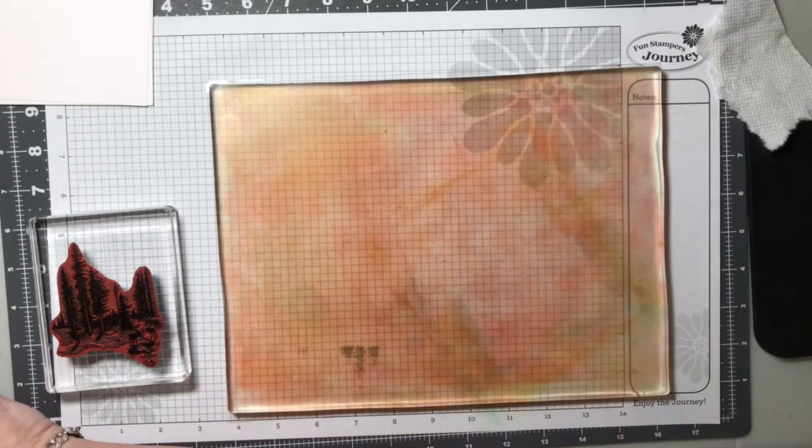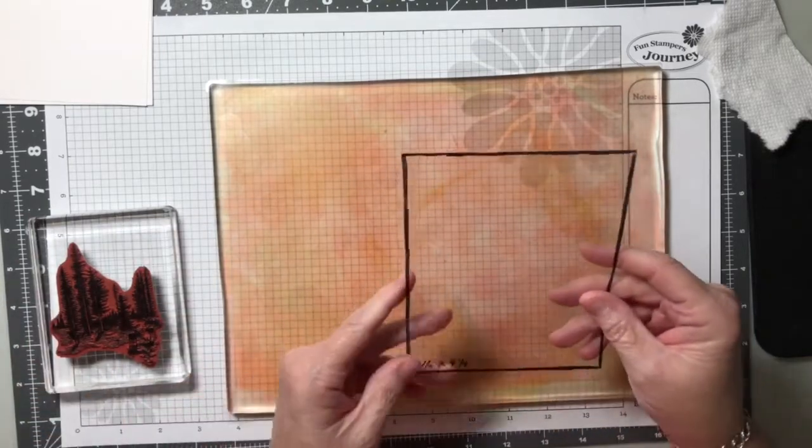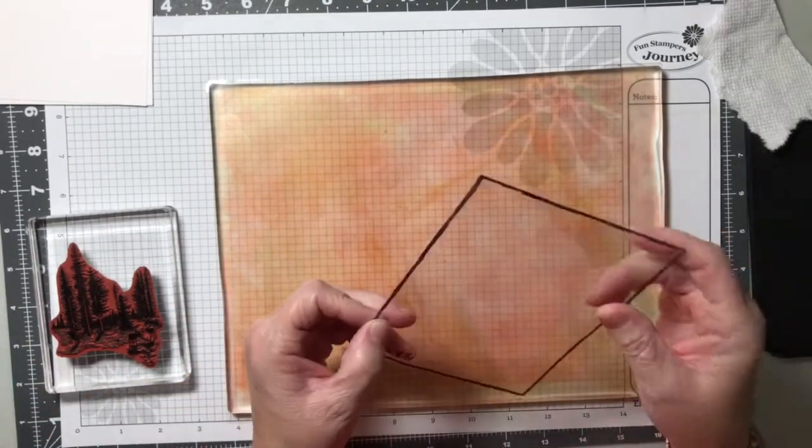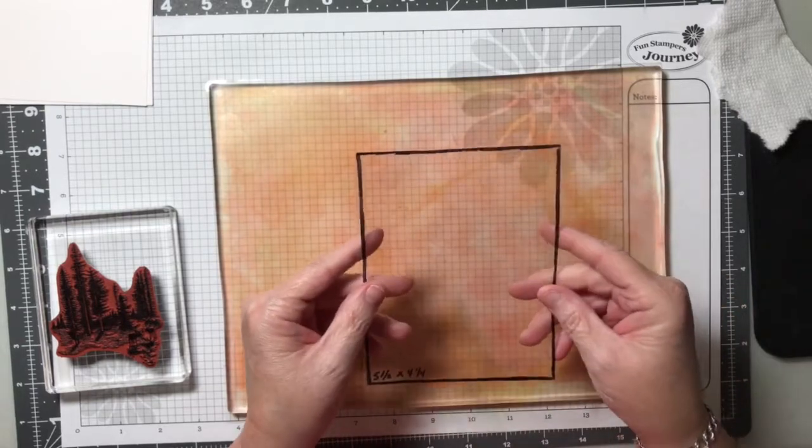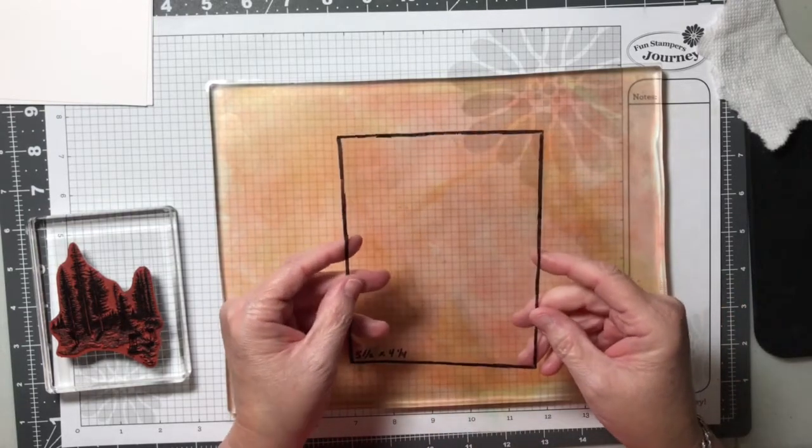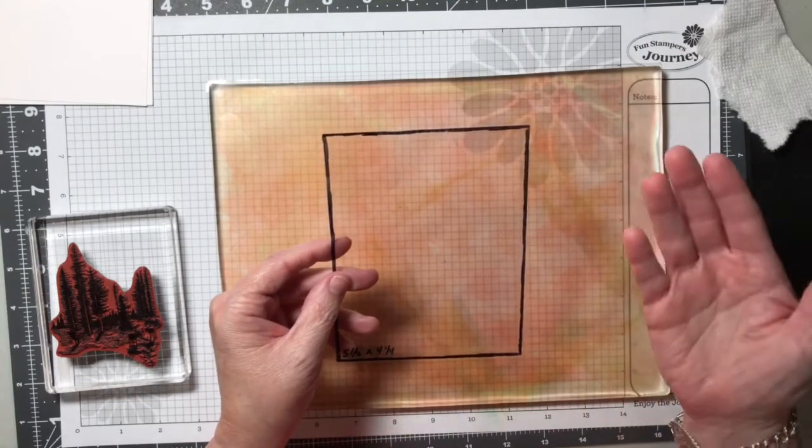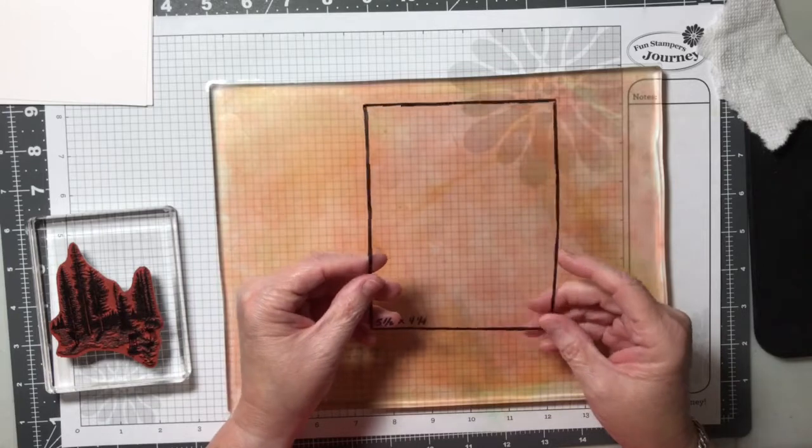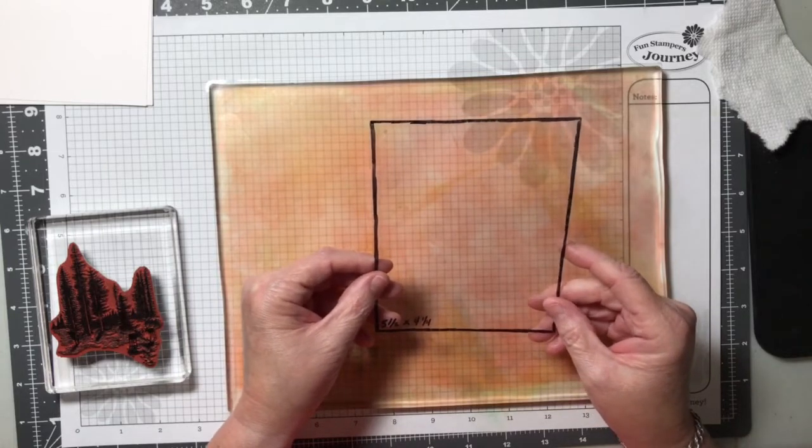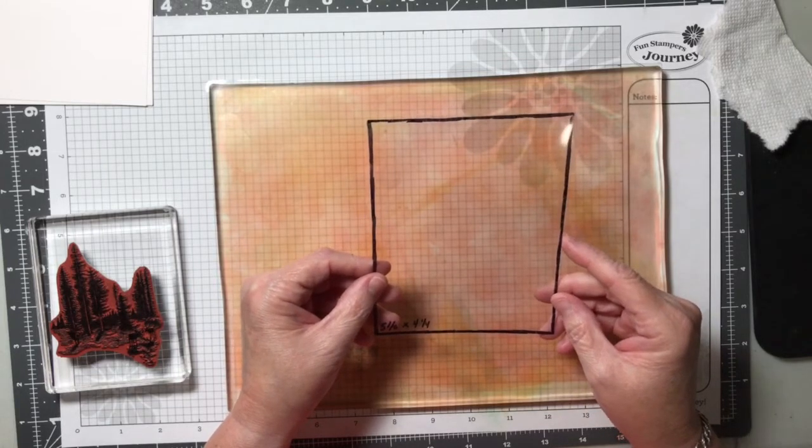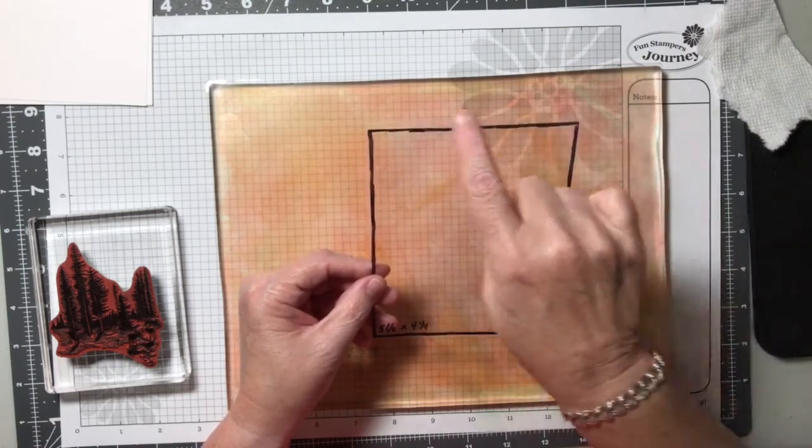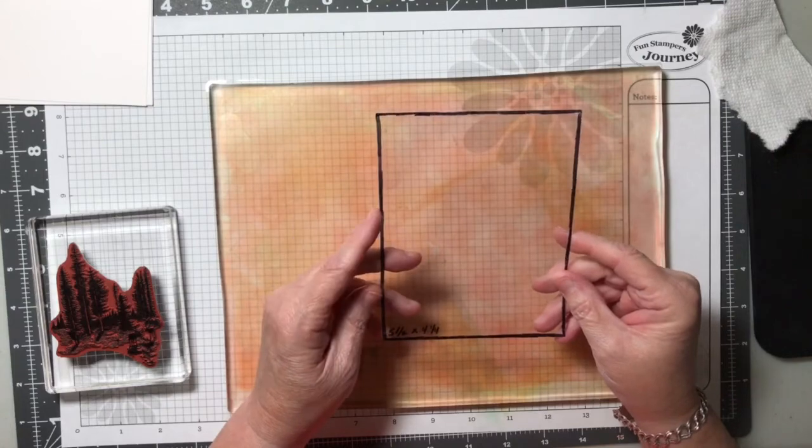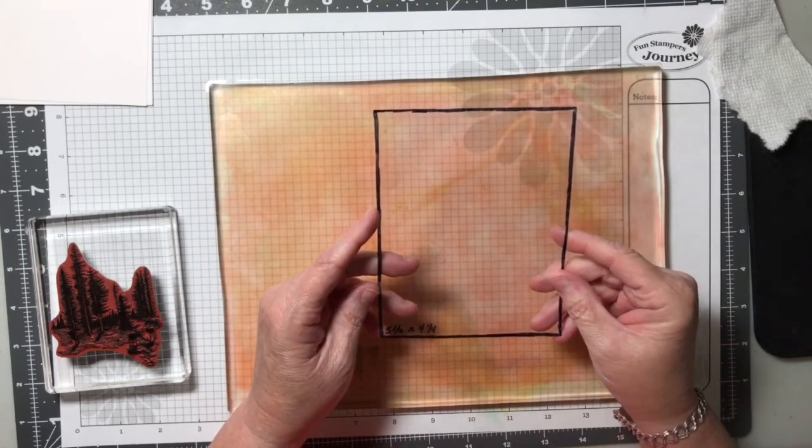I'm also going to be using an acrylic sheet or a worksheet. This is the flexible sheets that your stamps come on when you receive your stamp sets. And you can either keep your stamps on them or you can take the sheet and use it for other things. I just cut it down to 5.5 by 4.25. So it's the same size as one of our card fronts.